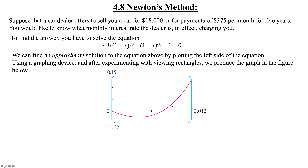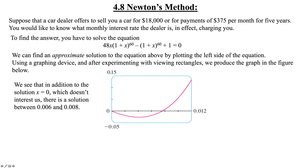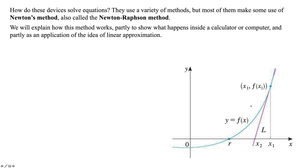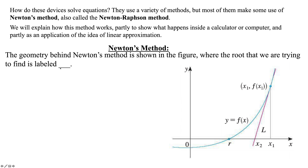Looking at the graph from zero to 0.2, we can see the zero is somewhere between 0.006 and 0.008. We ask the calculator to find the zero between those two numbers and get the interest rate value. What the calculator uses to find that is something called Newton's method, which relies on linear approximations.